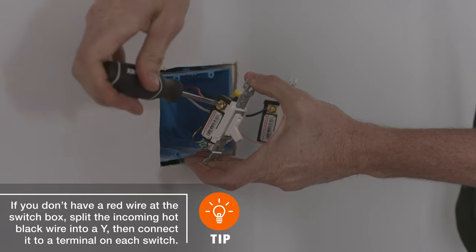In the switch box, run the black wire to the screw located in switch number one, and the red wire to the screw in switch number two.